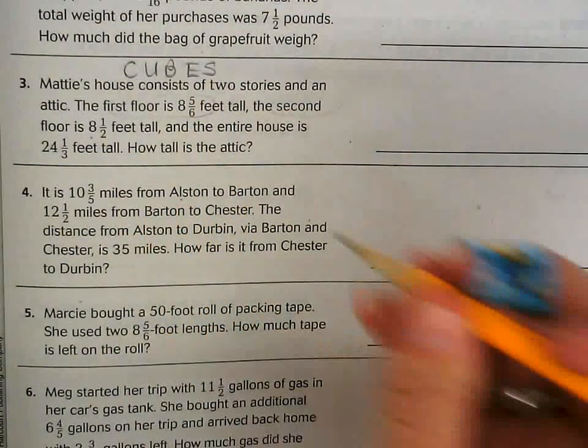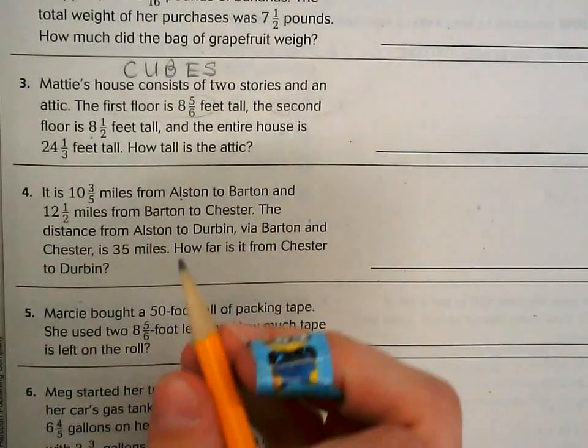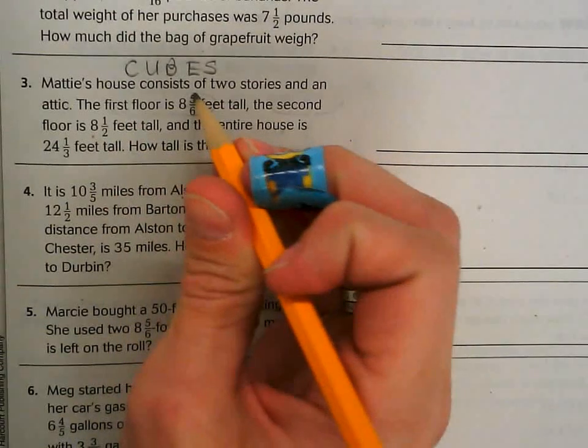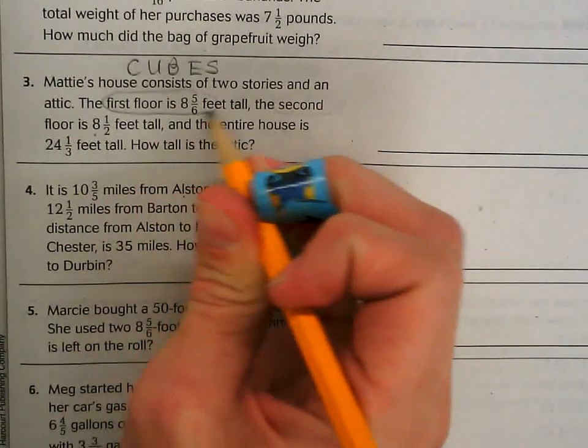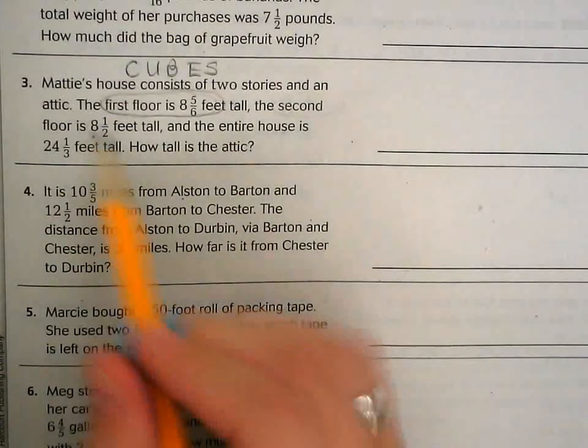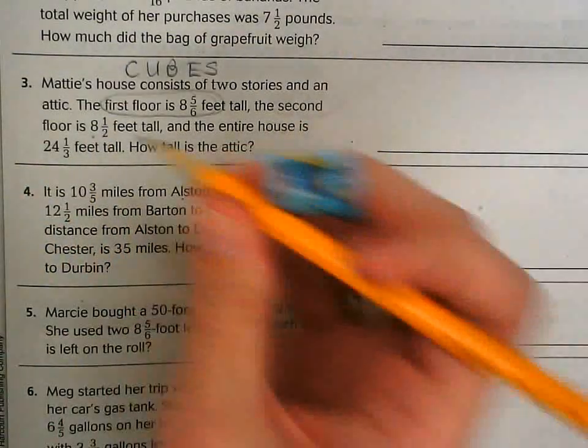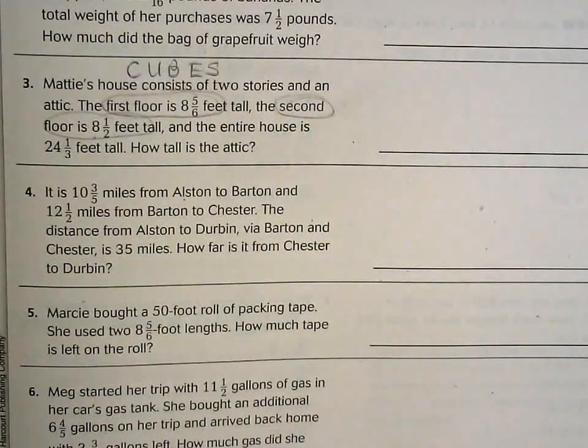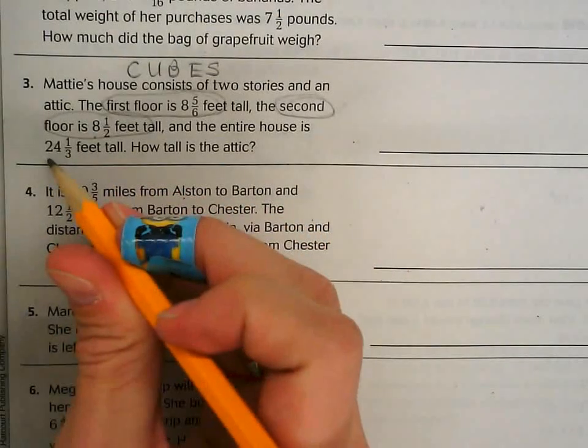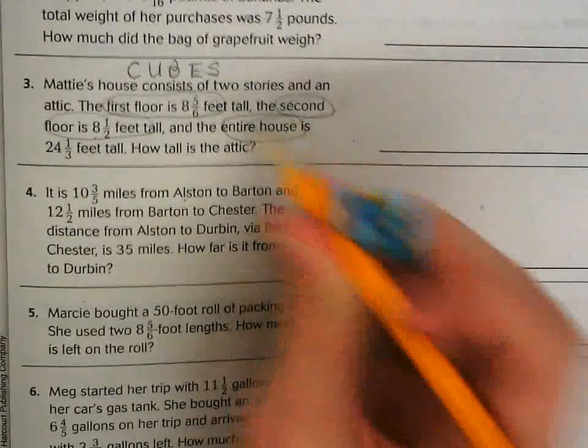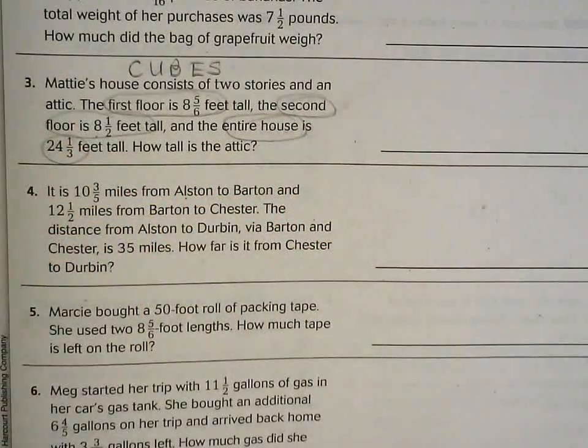When I circle the number, I'm also circling what that number represents. The first number is 8 and 5/6, which represents the first floor. The next number is 8 and 1/2, which represents the second floor. Then 24 and 1/3 feet, which is the entire house. Now I've circled all the numbers.